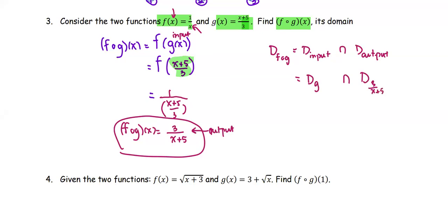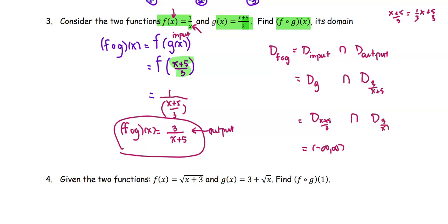With this setup, we look at the function g, which is (x + 5)/3. This is a linear function where the denominator is a constant term. We can rewrite it as (1/3)x + 5/3, meaning it is a polynomial function. So the domain of g is the set of all real numbers. Now we take the intersection with the domain of 3/(x + 5), the output of the composition.